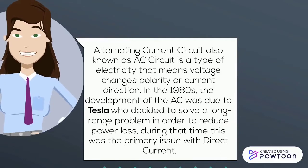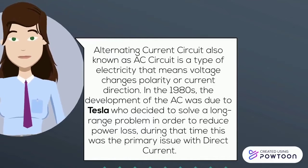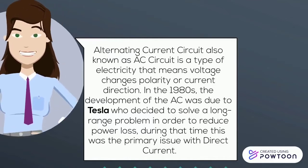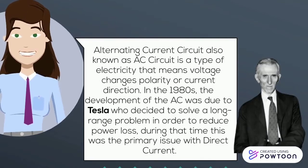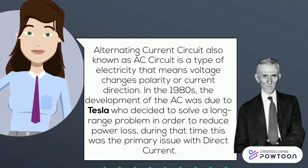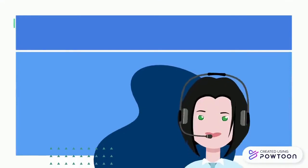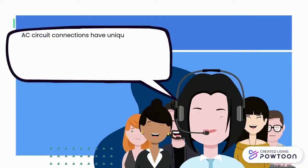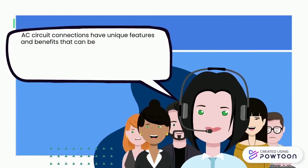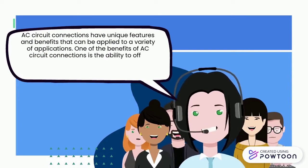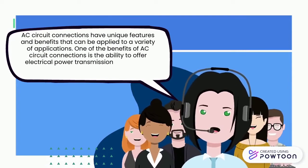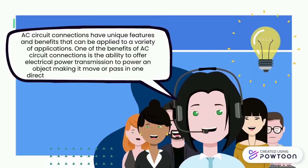Alternating current circuit, also known as AC circuit, is a type of electricity where voltage changes polarity or current changes direction. In the 1880s, the development of AC was due to Tesla, who decided to solve a long-range problem in order to reduce power loss. During that time, this was the primary issue with direct current. AC circuit connections have unique features and benefits that can be applied to a variety of applications, including the ability to offer electrical power transmission, making it move or pass in one direction and back to the other.